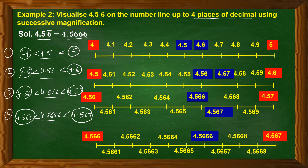We successively drill down, first fixing a small zone on the number line and then zooming in further to accommodate more decimal places. We follow this procedure step by step until we locate the precise point for our number.